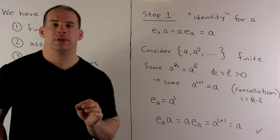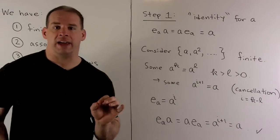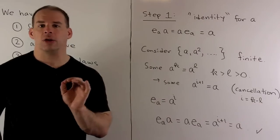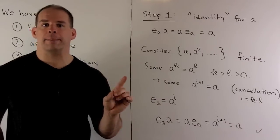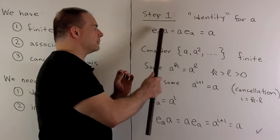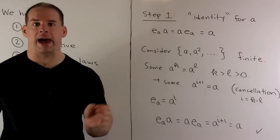Our first step, we want to show for each A that there's an identity element E sub A. So, we're not looking for the identity of the group yet. We're just looking for an E sub A such that E sub A times A in either order just gives us A back.